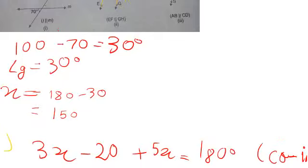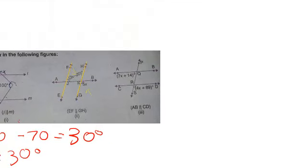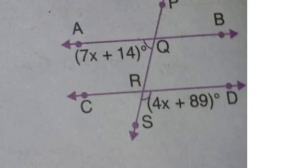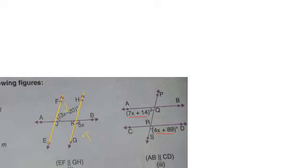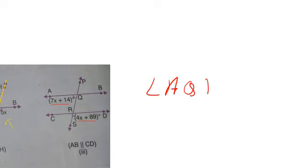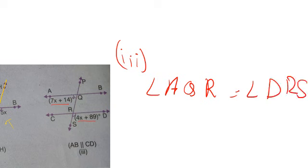For the third part, two angles are given: 7x plus 14 and 4x plus 89. These are co-interior angles, so they are supplementary. We name the angles AQR and DRS and set their sum equal to 180 degrees.